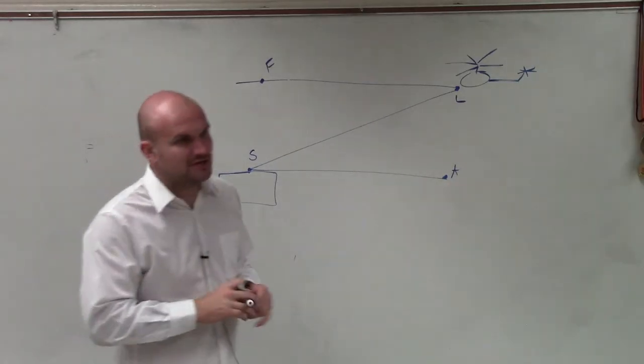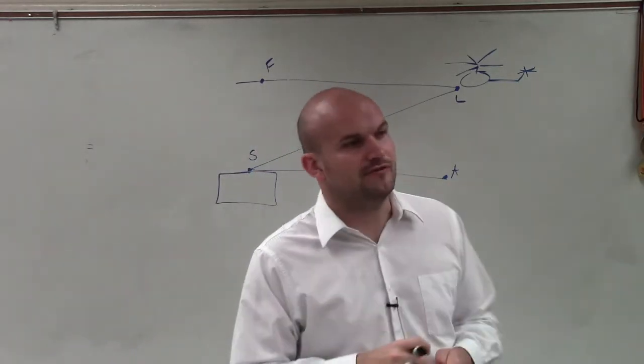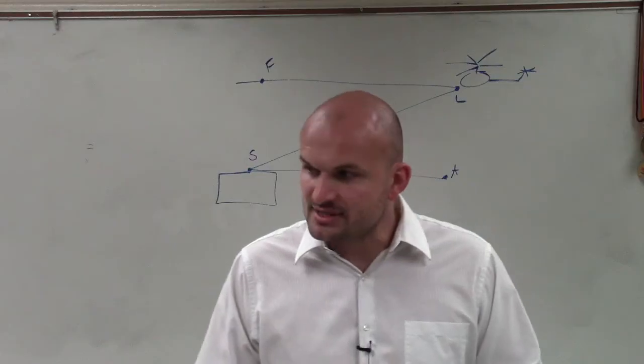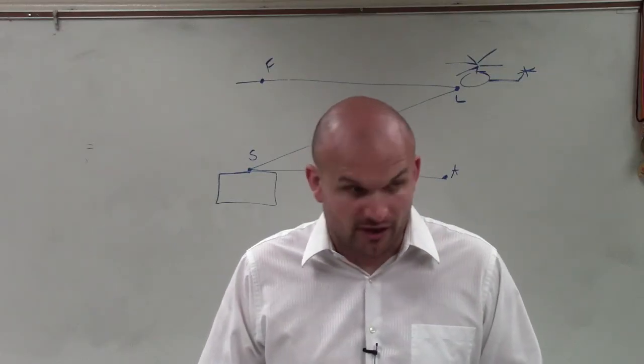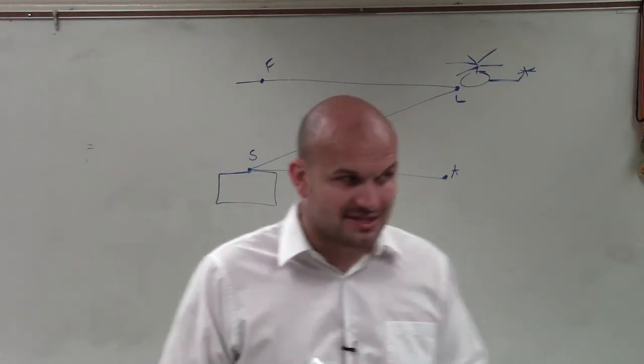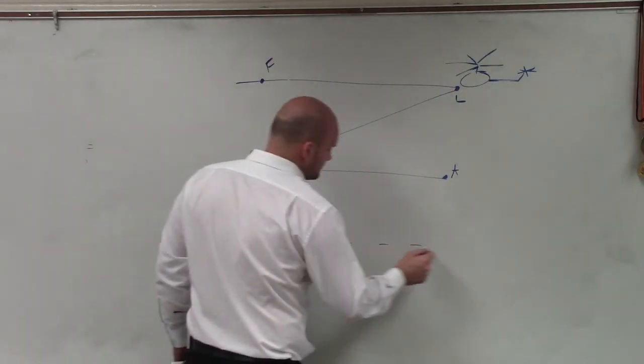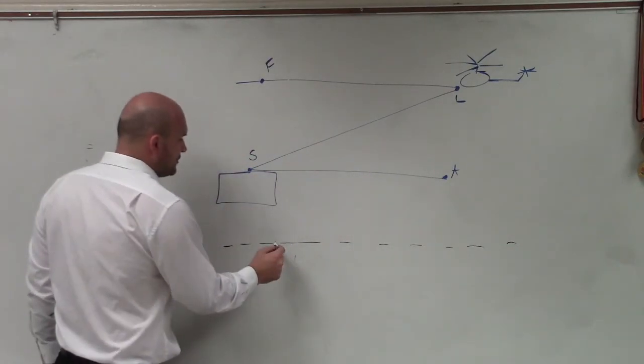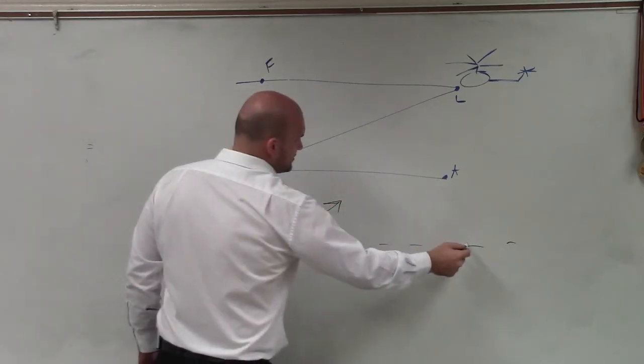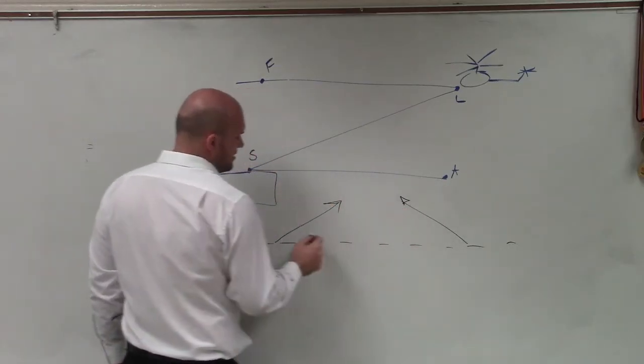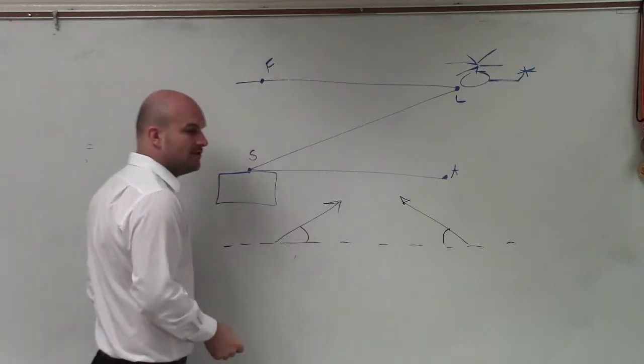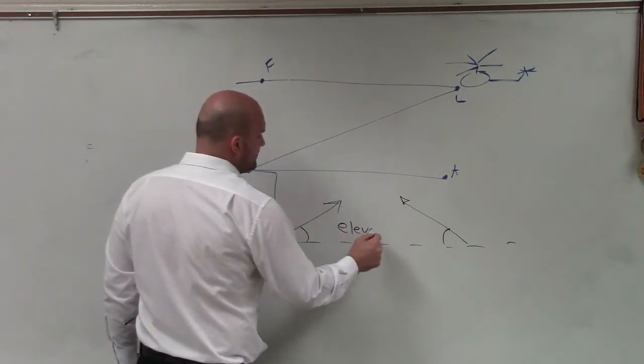When we were talking about angles of elevation and angles of depression, what we talked about is angles of depression and angles of elevation come from a horizontal line. So when we have a line that's horizontal, if we have an angle that is above the horizontal, it doesn't matter which direction it's facing, but if we have an angle that's above, we call it an angle of elevation.